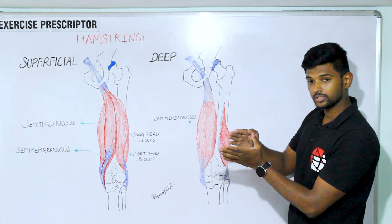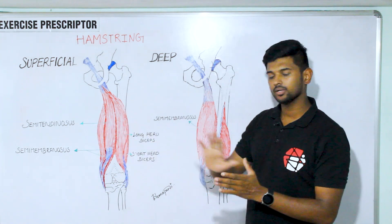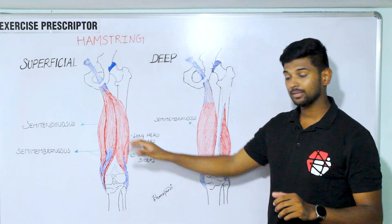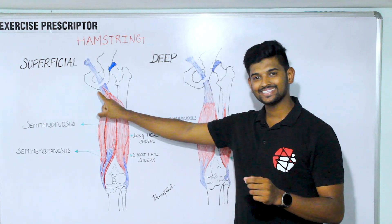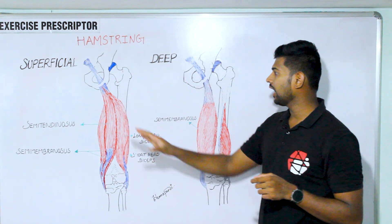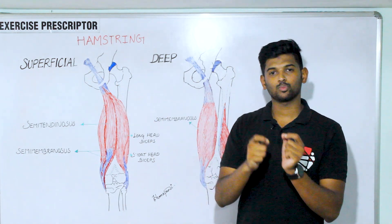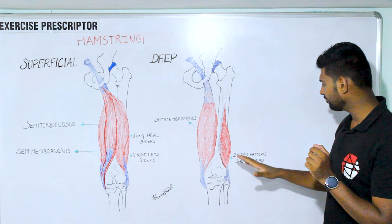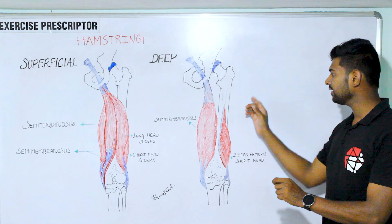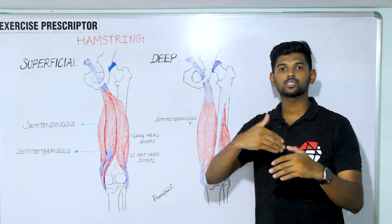The short head of biceps femoris is situated deeper to the long head of biceps femoris and semitendinosus. Now let's look at the attachments of the hamstring muscles. All three muscles attach proximally over the ischial tuberosity. Especially the long head of biceps femoris also attaches to the sacrotuberous ligament, forming the posterior superficial line. The short head of biceps femoris attaches proximally over the linea aspera and lateral supracondylar line.